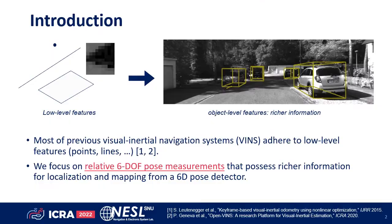With the advent of small size and cost-effective cameras and inertial measurement units, visual inertial navigation systems have been widely deployed in many autonomous systems. Many previous works on VINS have shown remarkable results. However, most of these were constrained to low-level features such as points, lines, and intensities.